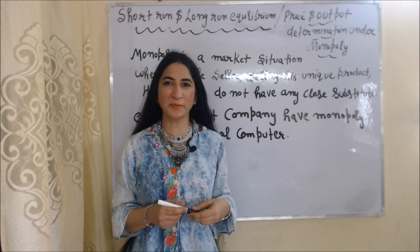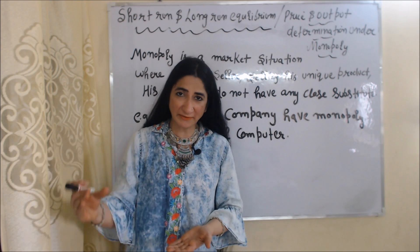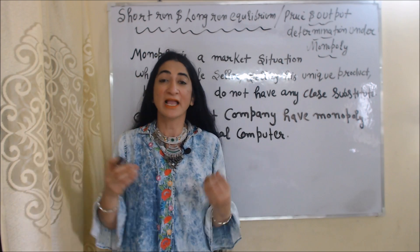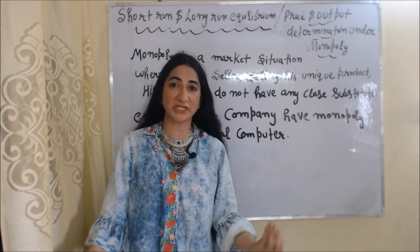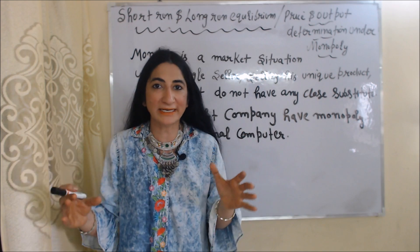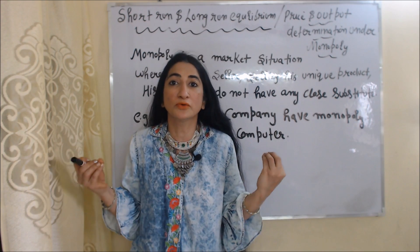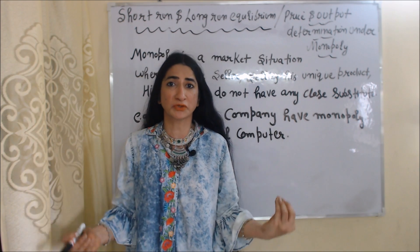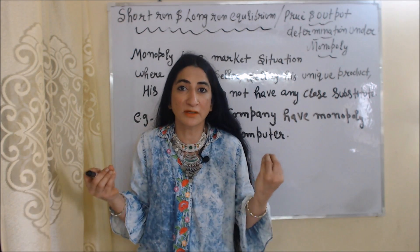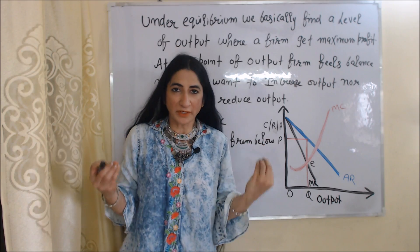Hello everyone, my name is Mini Seti. I hope you all are staying healthy. Today we are going to talk about short run and long run equilibrium and how price and output are determined under a monopoly market. A monopoly market is a situation where a single seller sells a unique product with no close substitution. For example, Microsoft has a monopoly in personal computers — their products are very unique with no close substitutes.